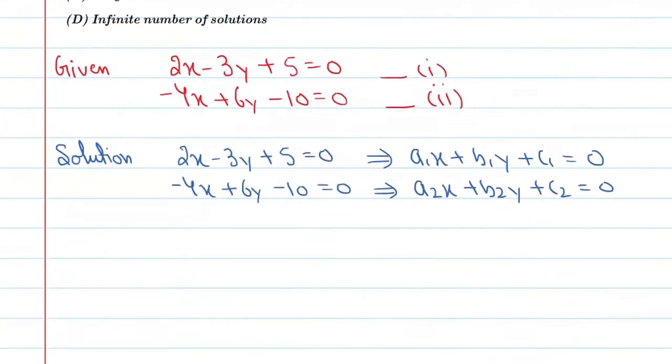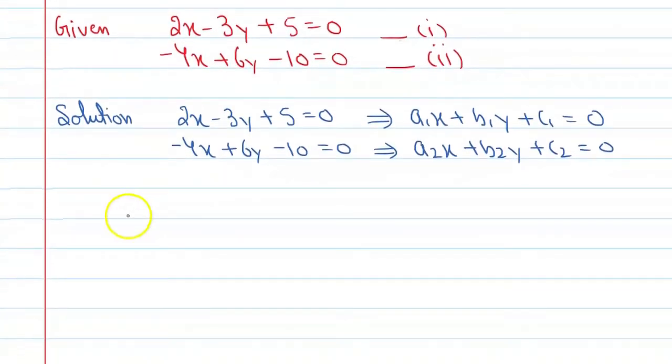Now, on comparing these equations we can say here a1 is equal to 2, b1 is equal to minus 3, c1 is equal to 5. Similarly, a2 is equal to minus 4, b2 is equal to 6, and c2 is equal to minus 10.